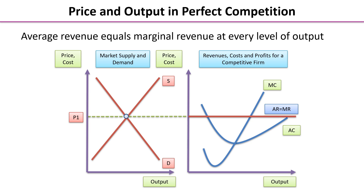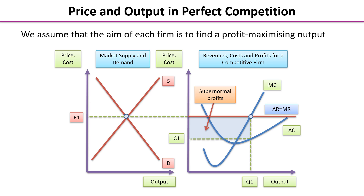Individual firms are assumed to be rational and profit-maximising, so they operate at the level of output where MR equals MC. The shaded box on the diagram shows the supernormal or abnormal profit that this firm is making.